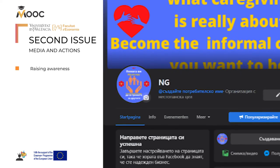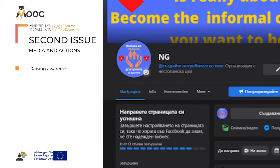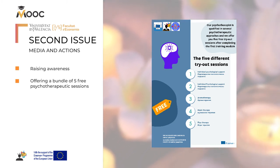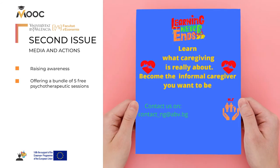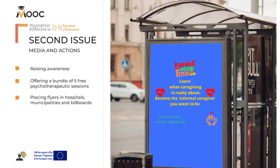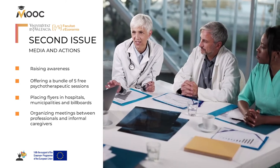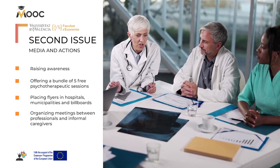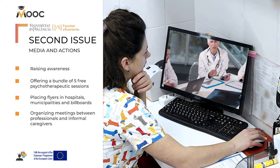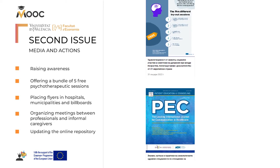Actions include: raising awareness of the need to not only take care of family members but also to take care of themselves; offering a bundle of five free psychotherapeutic sessions after completing the first module; placing flyers in hospitals, municipalities, and billboards to inform about the training offer; organizing meetings between professionals and informal caregivers to share problems, moods, and online socializing; and improving information by updating the online repository to avoid misinformation.